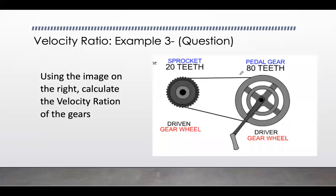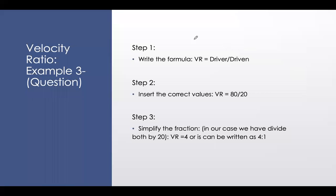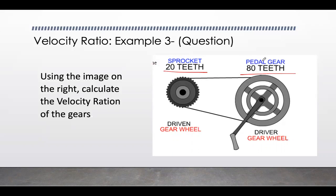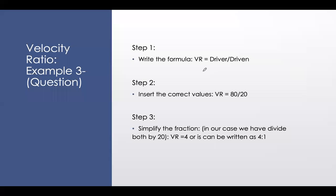Example 3: the driver gear has 80 teeth and the driven has 20. Write the formula, substitute 80 over 20, simplify to get a velocity ratio of 4:1. Rather write it as 4:1 rather than just 4, to avoid confusion later.